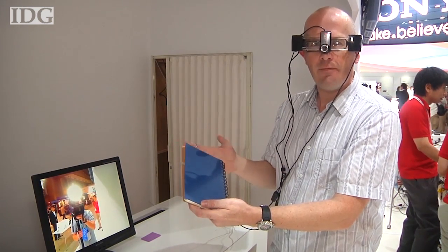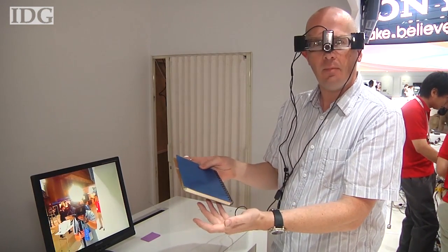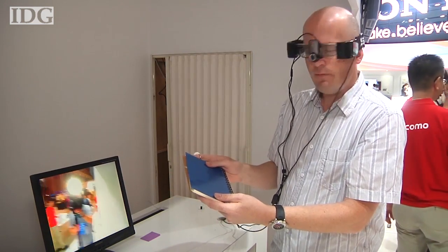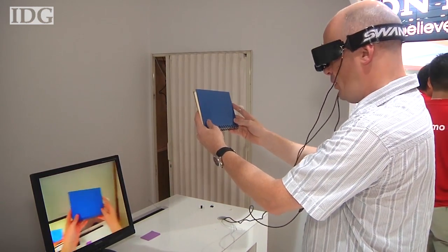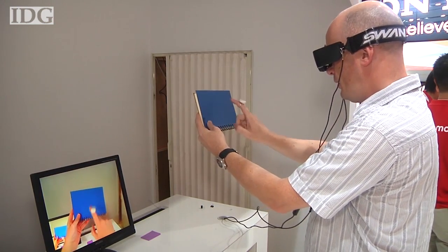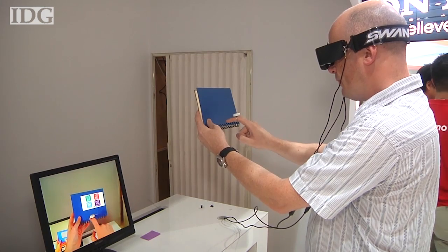This is Docomo's Anything interface, and almost anything can become an interface to the glasses. You're going to see what I'm seeing on the television screen. As I look at the book, I have a sensor on my finger that is sensing motion, and if I click, up comes the interface.